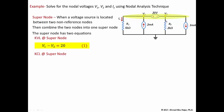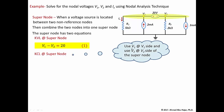Even though all currents leaving equal zero, the voltage at the V1 side is V1 and at the V2 side is V2. The current leaving R1 is V1 over 5k, plus the current leaving the 2 milliamp branch is minus 2 milliamps. Moving to the V2 side, the current leaving R2 is V2 over 2k, and the current leaving the 3 milliamp source is 3 milliamps. The sum of all currents leaving the super node equals zero.